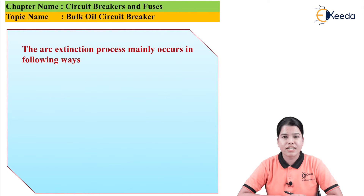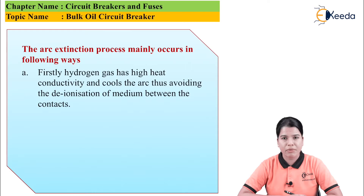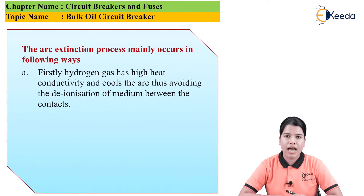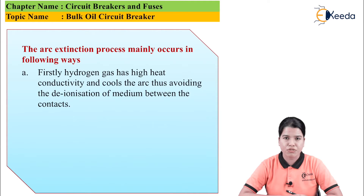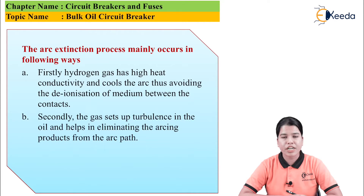The arc extinction in case of bulk oil circuit breaker takes place in the following ways. Firstly, when the arc is formed between the two contacts, it produces a large amount of heat. Due to this heat, the oil gets deteriorated and hydrogen gas is produced. This hydrogen gas has very high thermal conductivity, due to which it cools the arc.